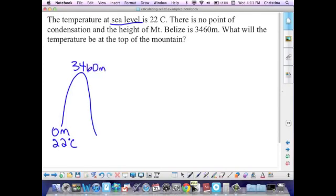Now we're going to calculate this. This is very easy and straightforward. We need to first calculate the distance between our starting point and the top of the mountain. So 3460 minus zero equals 3460. Very easy.